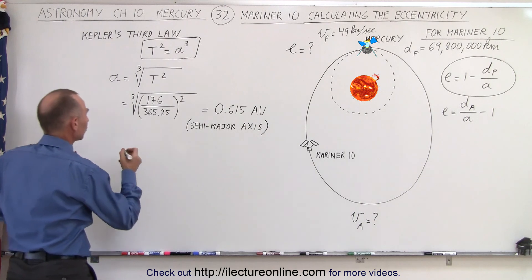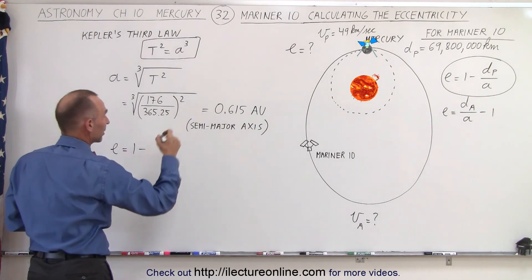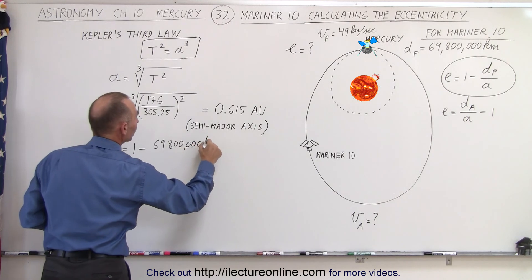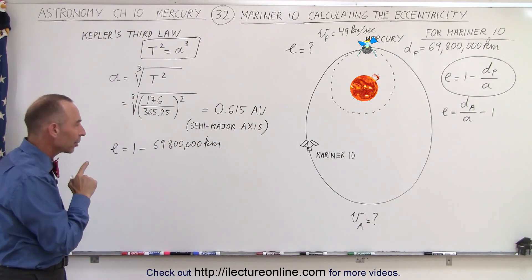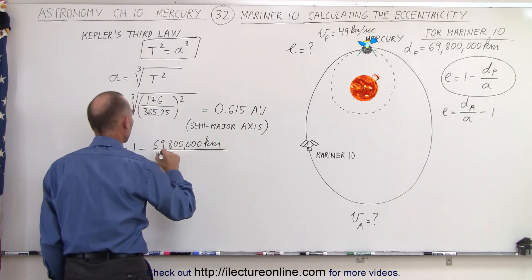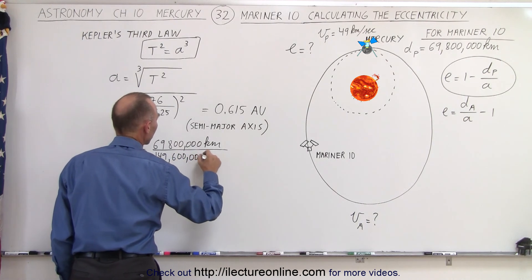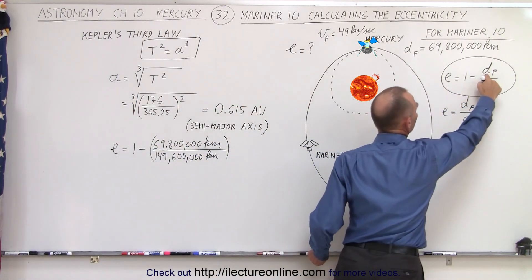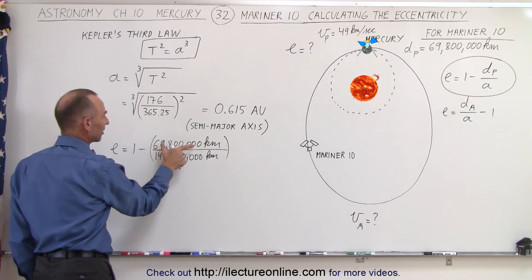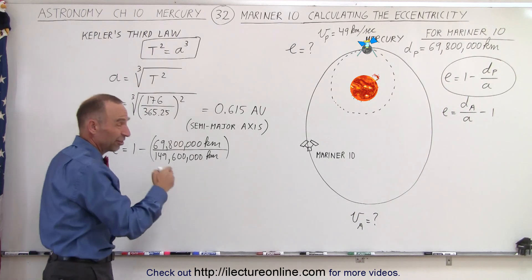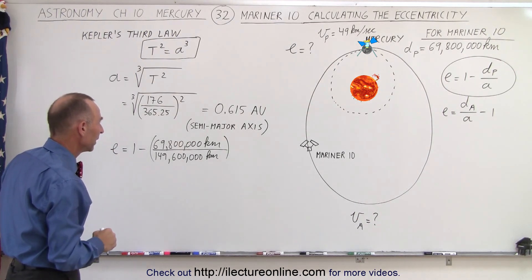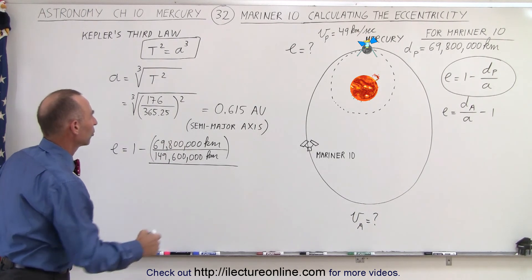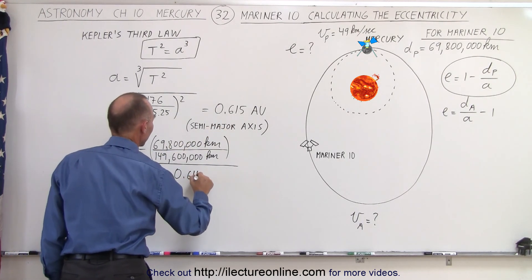Now for the eccentricity. E is equal to 1 minus the distance to perihelion, which is 69,800,000 kilometers. Since we need that distance in astronomical units, we divide it by one astronomical unit, which is about 149,600,000 kilometers. So we take 69.8 million divided by 149.6 million — the average distance between the Earth and the Sun — and then divide that by the semi-major axis in astronomical units, which is 0.615.